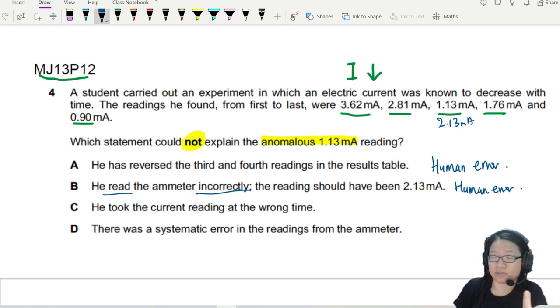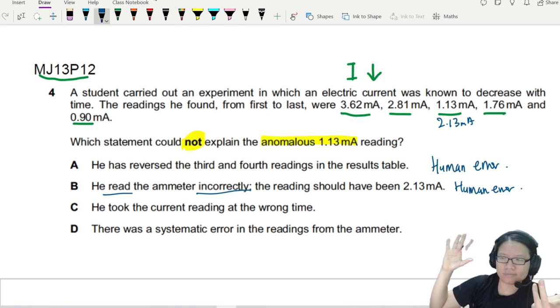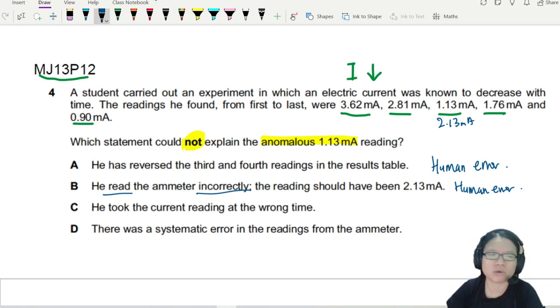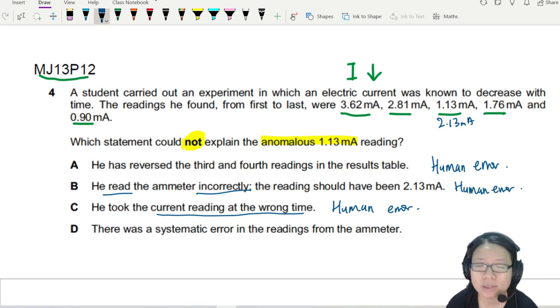It also happened to us before. Like in the math paper you copy it over and get a different thing. Option C: He took the reading at the wrong time, also can. So all of this is human error. Could it explain things? Yes. Human errors, it's not a mistake.